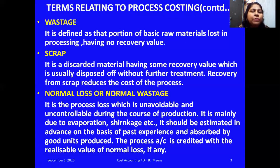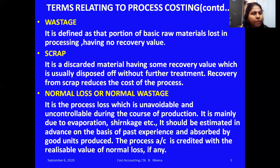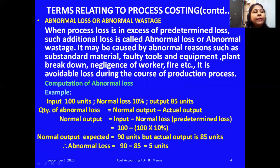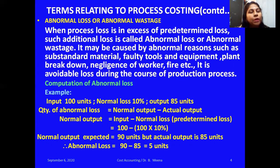Based on past experience, the manufacturer estimates the normal loss for each process. This normal loss is credited in each process account. Abnormal loss, on the other hand, is when the actual process loss exceeds the predetermined normal loss. For example, if I give 1,000 units as input and estimate 100 units as normal loss, that estimated 100 units is the normal loss.